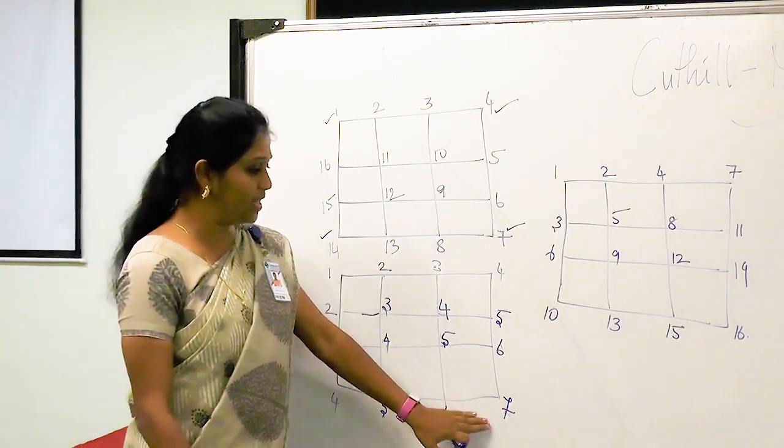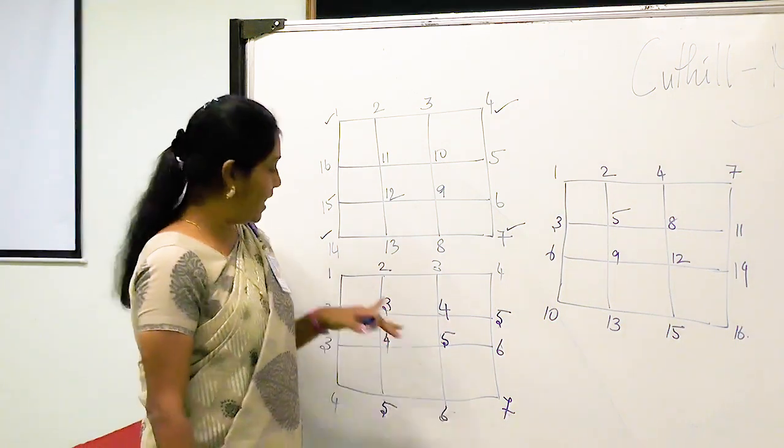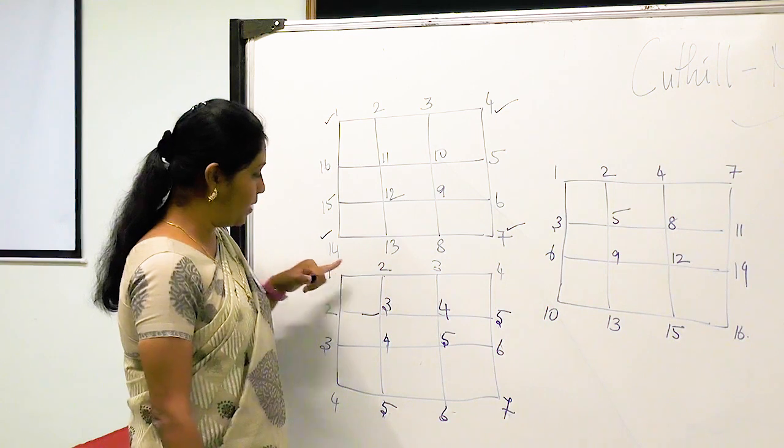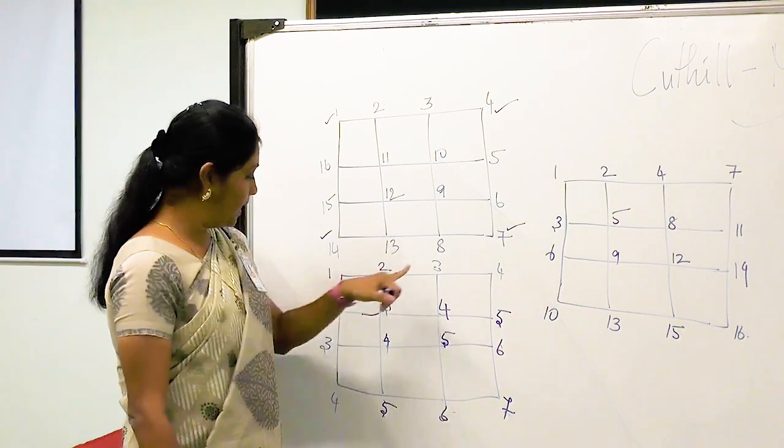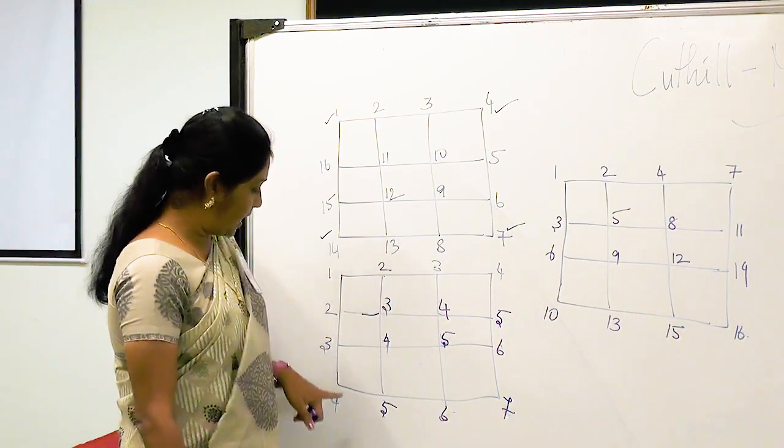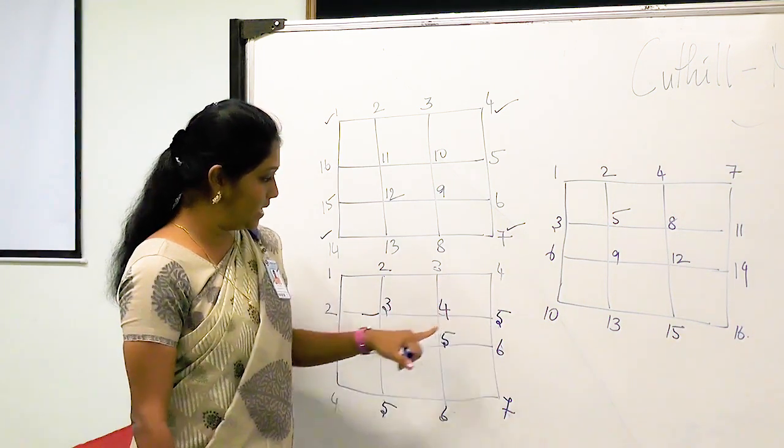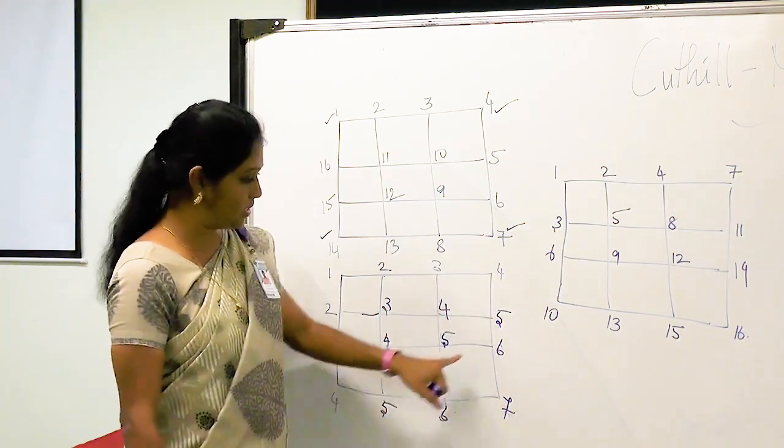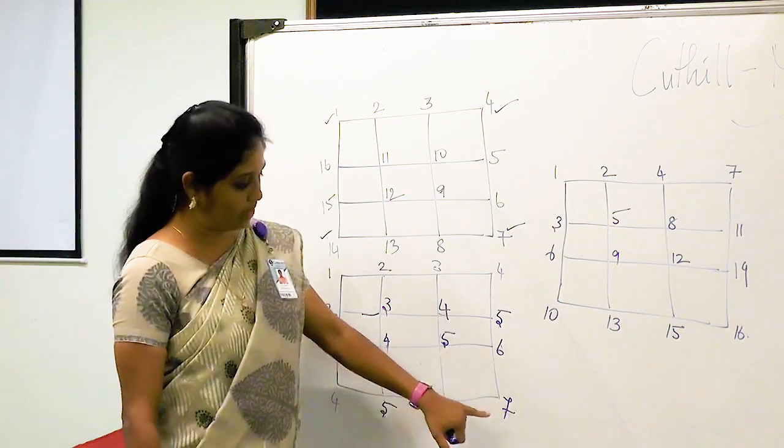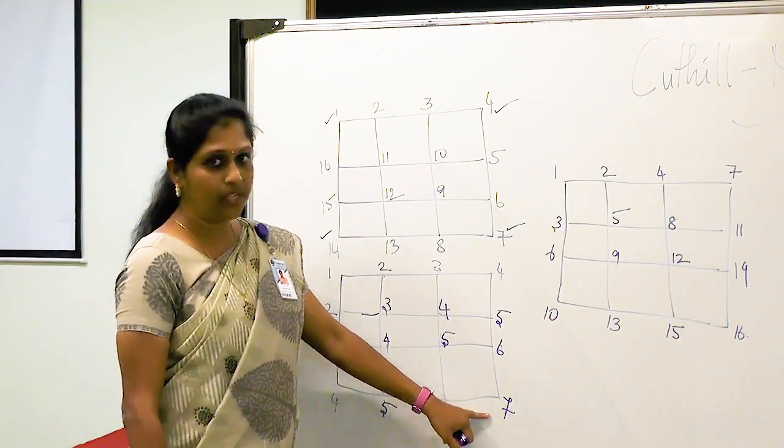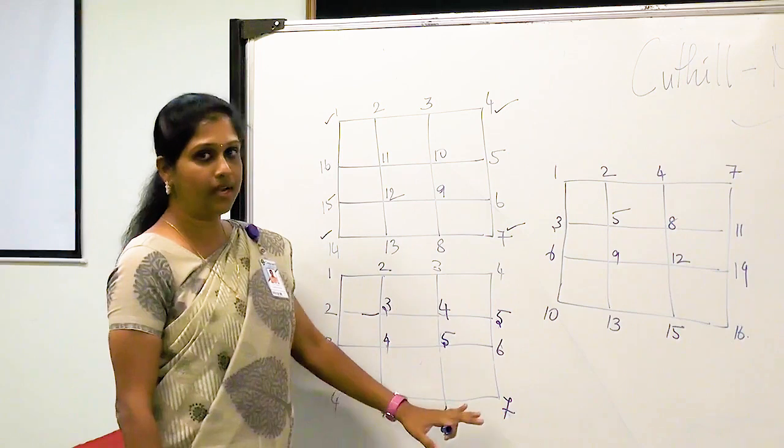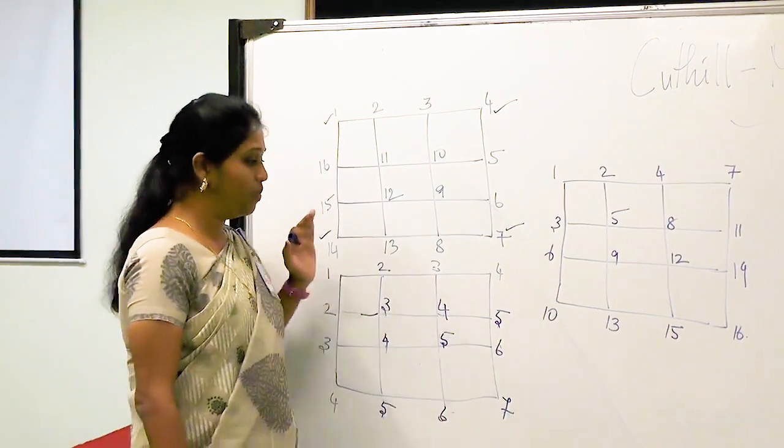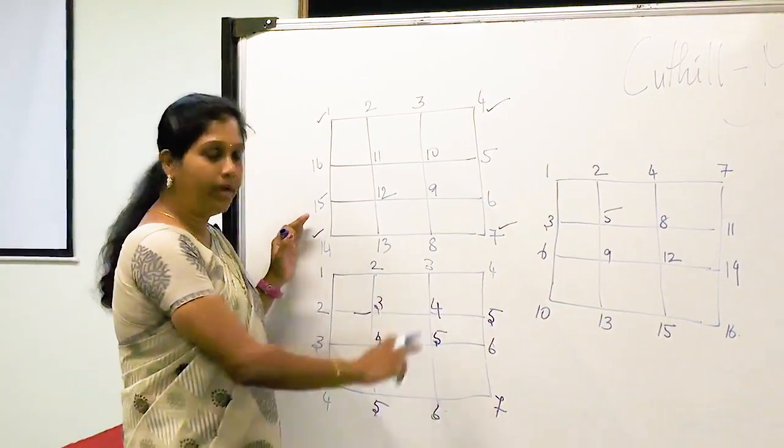So totally we have 7 levels. In level 1, we have 1 vertex. In level 2, we have 2. In level 3, we have 3. And in level 4, we have 4 vertices. In level 5, we have 3 vertices, and level 6 has 2 and level 7 has 1. So this is the total level numbering. Finally, we would be numbering the vertices according to the levels.